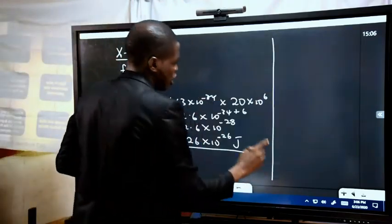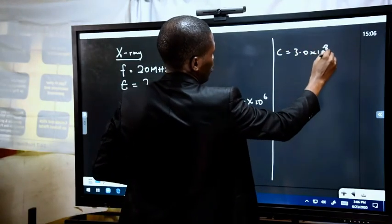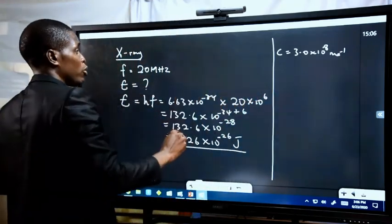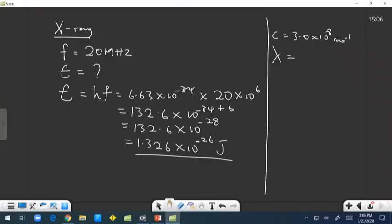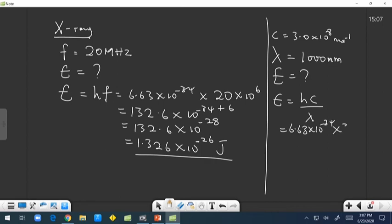Light travels at a speed of 3.0 × 10⁸ m/s. We can also calculate the photon energy if the wavelength is known. If the wavelength of X-radiation is given as 1,000 millimeters, using E = HC/λ: E = (6.63 × 10⁻³⁴ × 3.0 × 10⁸) / λ, where λ = 1,000 × 10⁻³ meters. You can convert and complete the calculation.